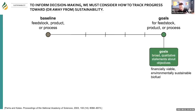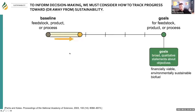I want to begin with a little bit of terminology and the way we think about these problems. Our goal is to track progress toward or away from sustainability, and ideally point us toward more sustainable systems. So if we have some baseline where we are today with a feedstock, product, or process, and we have broad goals — things like financially viable, environmentally sustainable biofuels — we want to track progress in that direction.